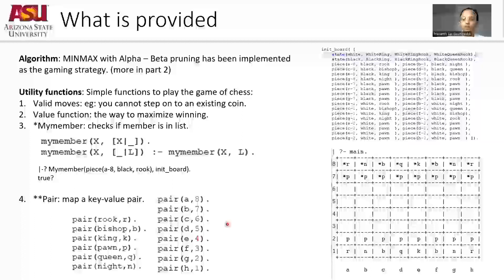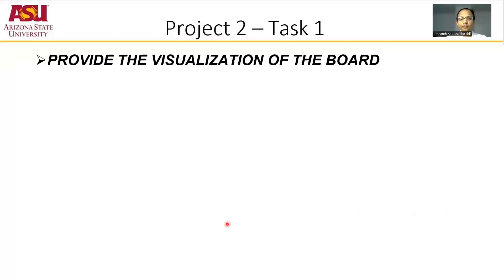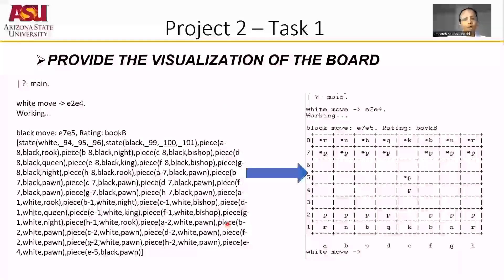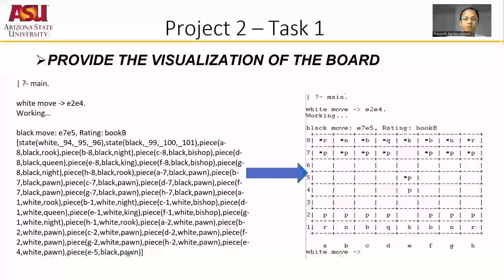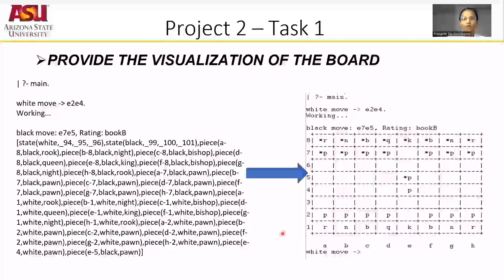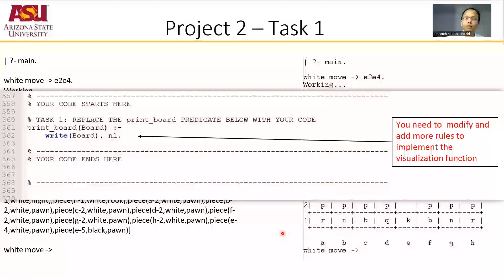Now let's move into task one of the project. Task one is to provide the visualization of the board — that is, the current state of the board displayed on your screen. So after two moves, say you make a move of moving the pawn from E2 to E4 and black has made a move of pawn from E7 to E5, the state of the board would be as provided to the left of your screen and its visual representation as provided to the right. Now to print out this visualization, you should provide the code. Having done project one where you printed out ASU within a box, task one of project two should not be very difficult. A placeholder has been provided in chess.pl for you to add your code.